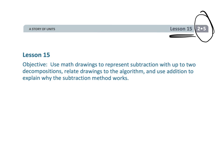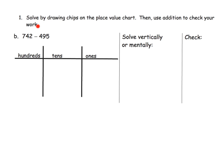This is second grade module 5 lesson 15. In this lesson we're going to be using the standard algorithm for subtraction, but we're going to continue using math drawings like the place value disks in order to make meaning and make sure we understand the algorithm rather than just having a rule that our students memorize. In this problem we're told to solve using the place value disks, use addition to check our work, and we have a choice to solve the problem mentally or vertically. I'm going to actually do both because it's a really nice problem.